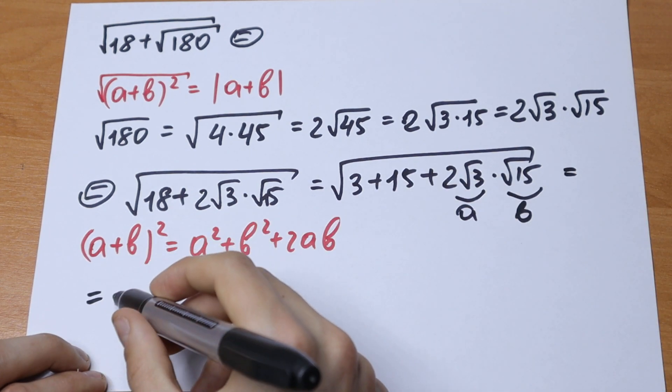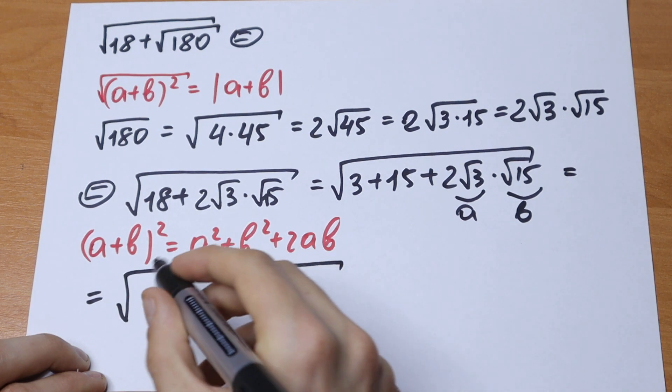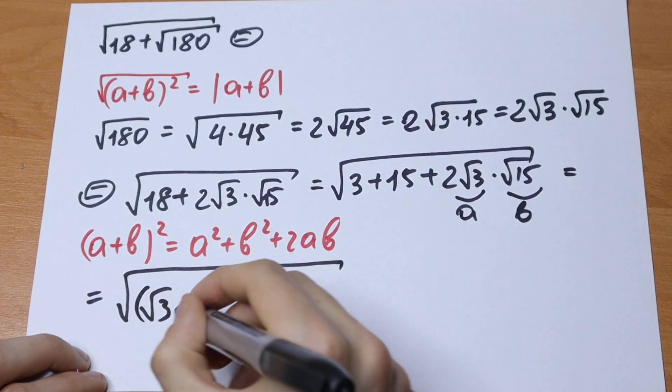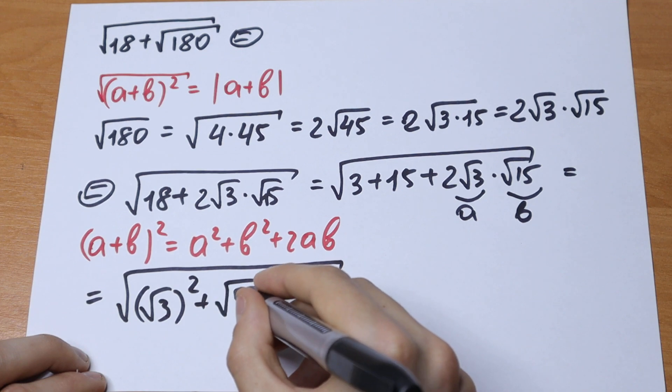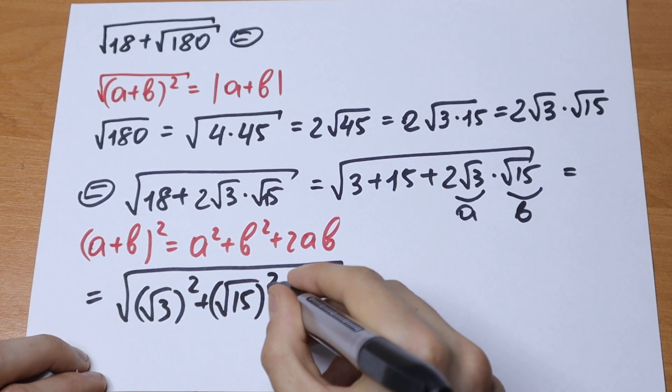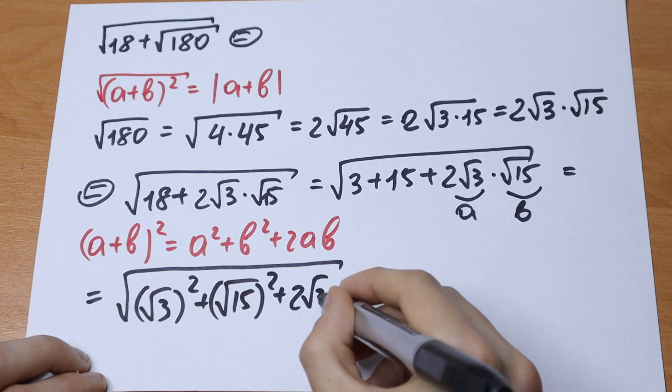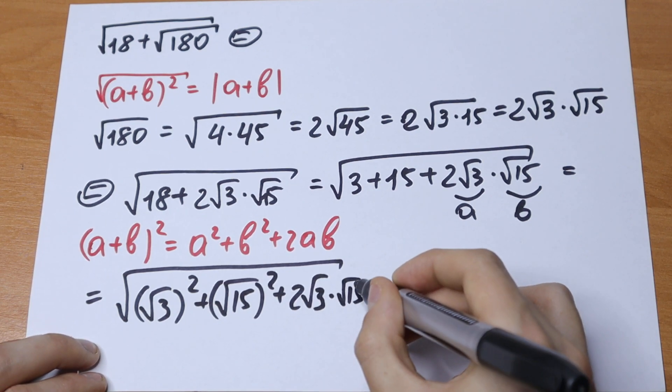We can do a little trick here. We can write this 3 as square root of 3 squared plus square root of 15 squared plus 2 square root of 3 times square root of 15.